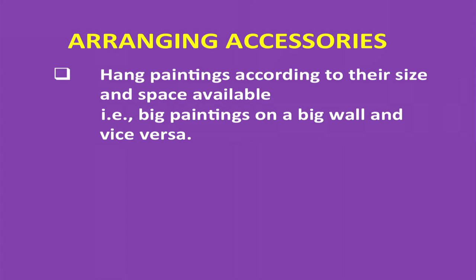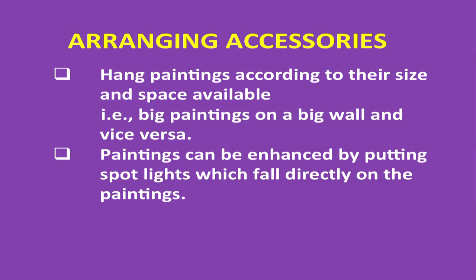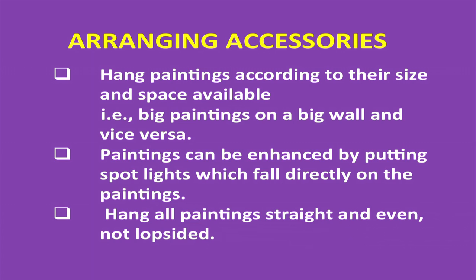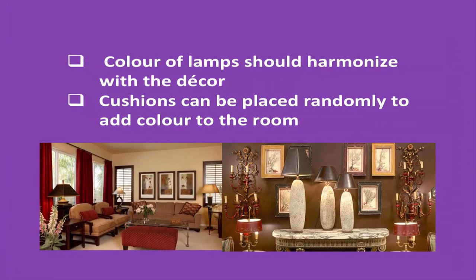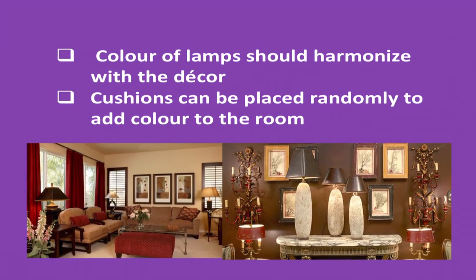Now we need to understand how to arrange accessories. Hang paintings according to their size and space available — big paintings on big walls and small paintings on small walls. Paintings can be enhanced by spotlights that fall directly on them, increasing their beauty and details. Hang all paintings straight and even, not lopsided, following a uniform arrangement on the wall. The color of lamps should be harmonized with the entire decor of the house. Cushions can be placed randomly to add color and variety to the room.